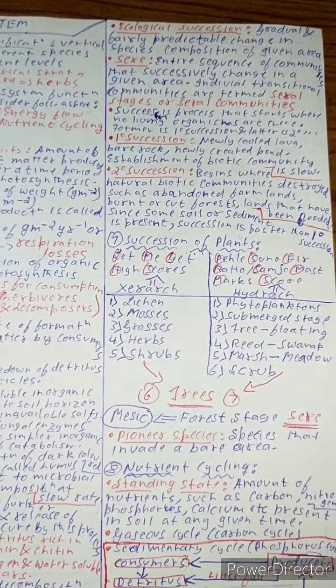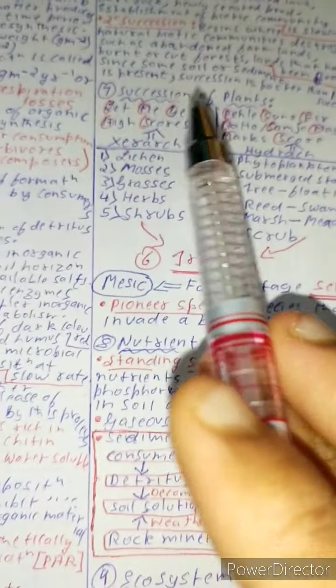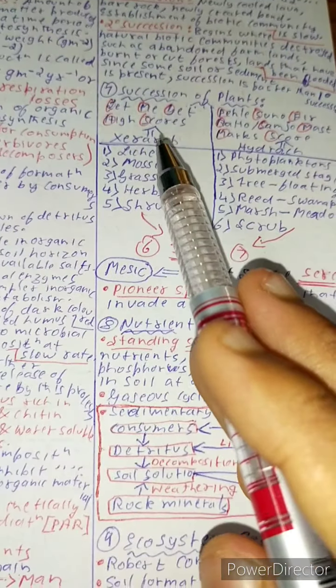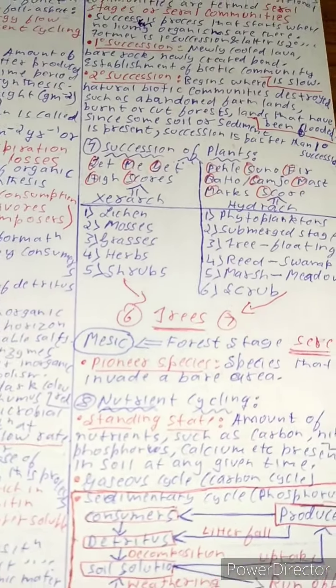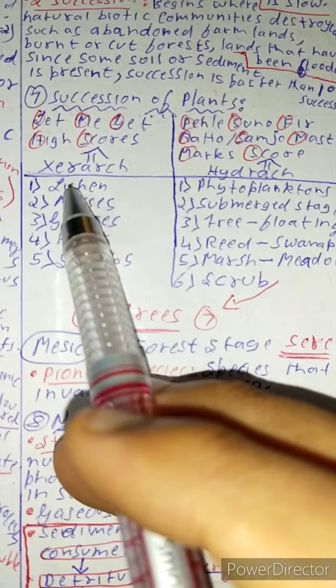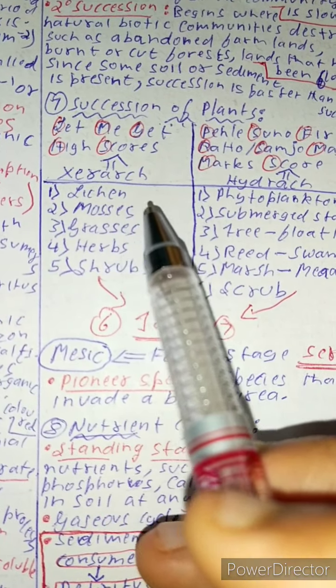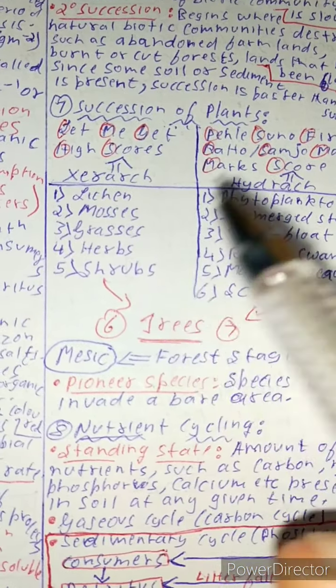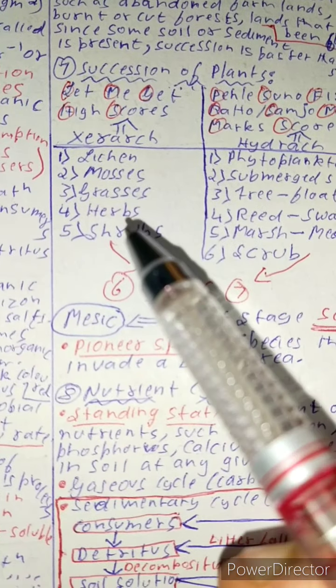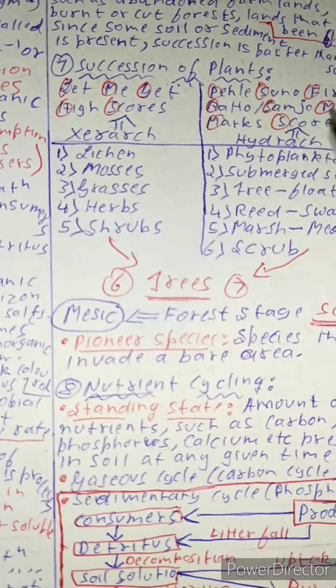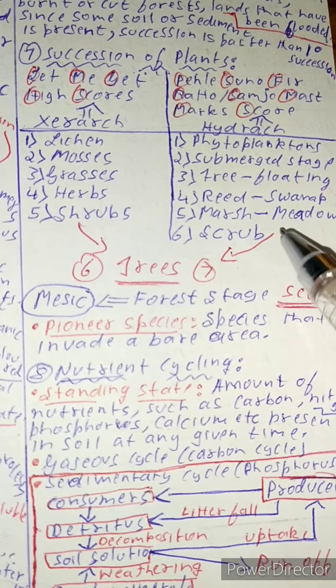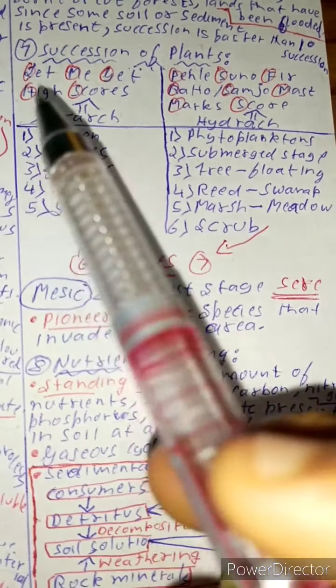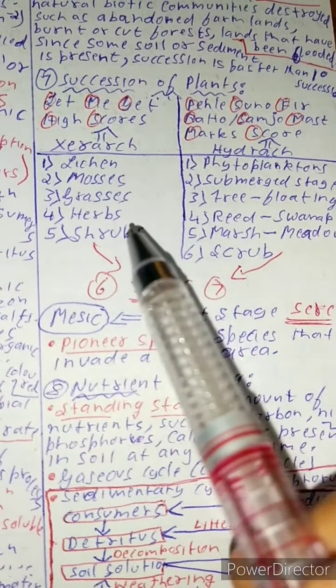Now let us see the kinds of succession in plants: one is xerarch and hydrarch. Xerarch is on land and hydrarch is the succession in water, as the term suggests. In xerarch community, first one is lichen, then the second one is mosses, third grasses are formed, then herbs, later shrubs, and later trees are formed. In case of hydrarch: phytoplankton, submerged, free floating, reed swamp, marsh meadow, at last scrub is formed and trees are formed.